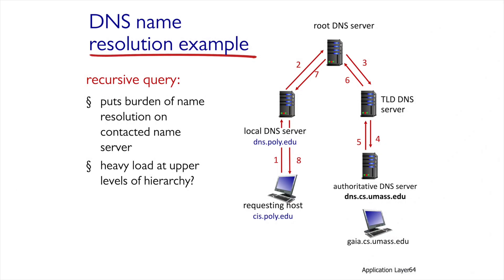The second method is the recursive method. In this method, every server actually takes upon itself the job of searching for the address, so the request chain is deep. Looking at the same scenario, the local server refers to the root server, which itself refers to the TLD server, which refers to the authoritative server. The response returns along the entire length of the chain.